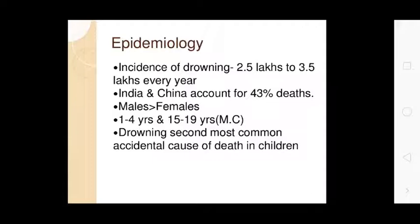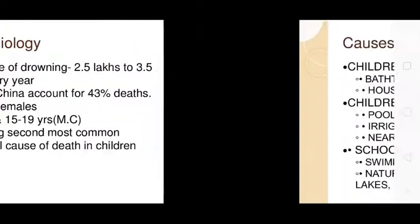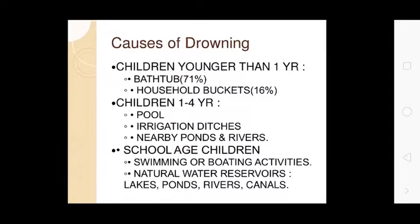Drowning is the second most common accidental cause of death in children. For children younger than 1 year, the common sites are baths, household buckets. For children 1 to 4 years, common sites are pools, irrigation ditches, nearby ponds, and rivers.